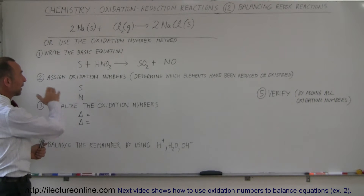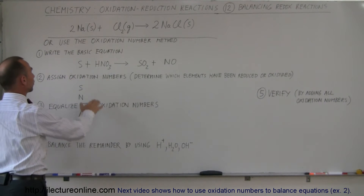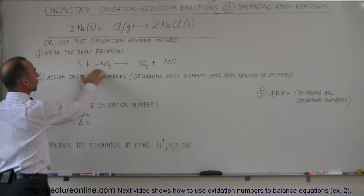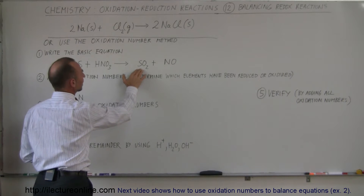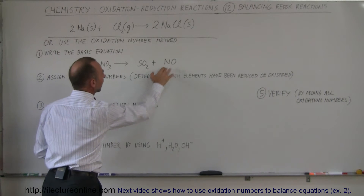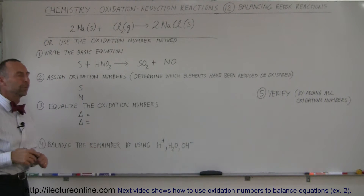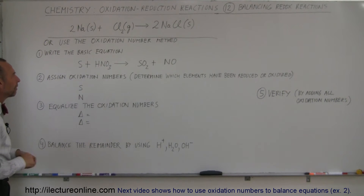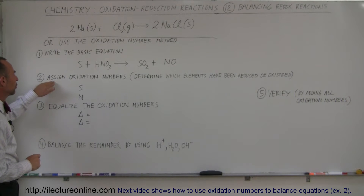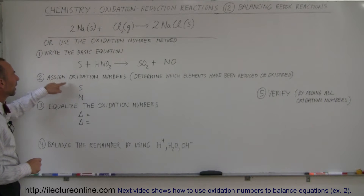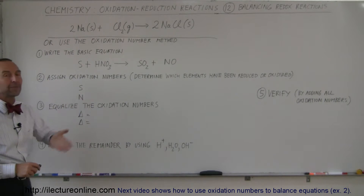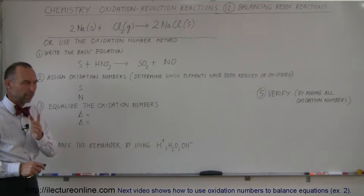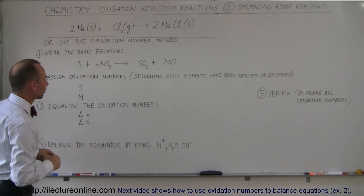First you write down the basic equation. We're adding sulfur to nitric acid to get sulfur dioxide and nitric oxide. The first thing you do is assign oxidation numbers and determine which of the elements have been reduced and which have been oxidized.